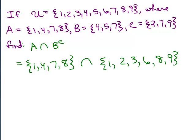So now we have these two sets and we want their intersection. We want to see if they have anything in common. They both have a one in common, no four in common, no seven in common, and they have an eight in common. So that's the answer.